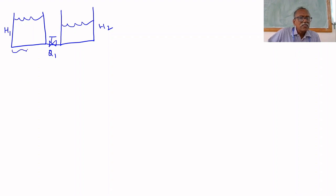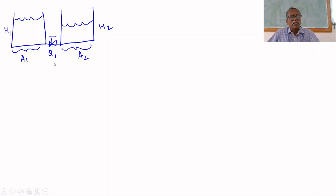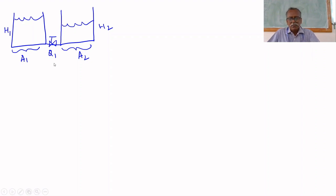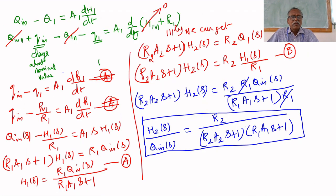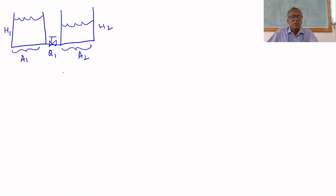The area of cross section of the first tank is A1, and the area of cross section of the second tank is A2. The outflow rate from the second tank is Q0.